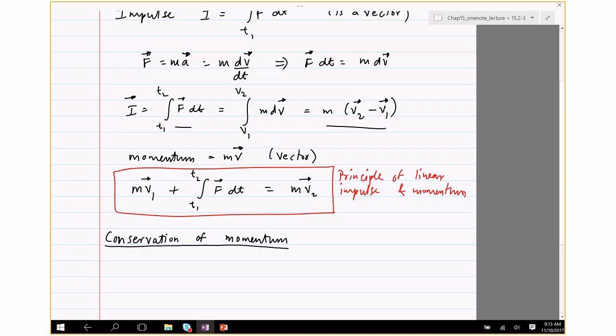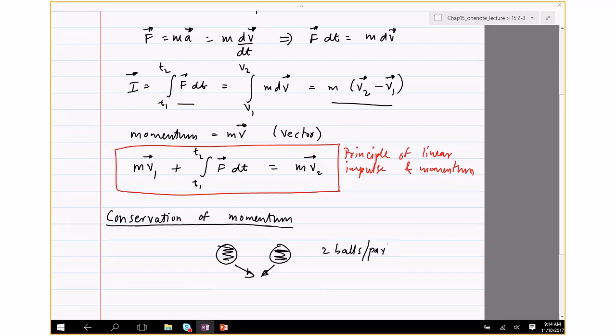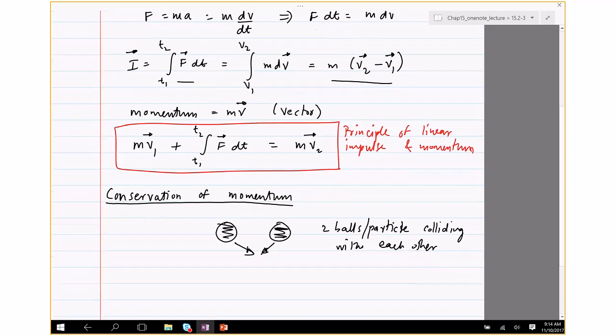Conservation of momentum is another important expression. This is very similar to conservation of energy. And what is the conservation of momentum? I'll illustrate it with an example. If you have two particles colliding with each other, so two balls or particles colliding with each other, then it turns out that the total impulse is—sorry, the total momentum is conserved. So the total momentum is constant.